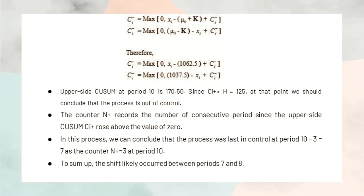The quantities of n positive and n negative indicate the number of consecutive values that the CUSUM C i positive or C i negative have been zero. The CUSUM calculation shows that the upper side CUSUM at period 10 is 170.5.